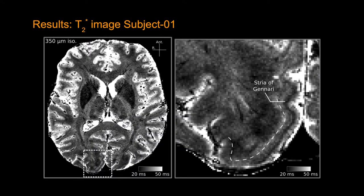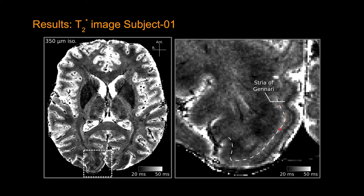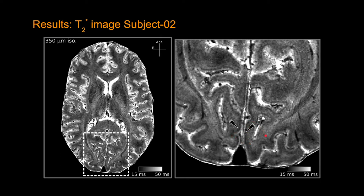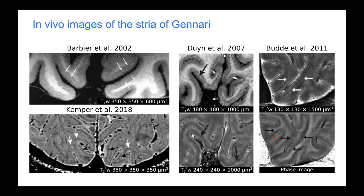Then we do T2* fitting, and here are some results. This is from subject one — you can see a large coverage. When we zoom into the visual cortex, the stria of Gennari is very easily visible. The white matter/gray matter line comes from the T1 image that we acquire. Similarly for subject two, the stria of Gennari is visible, and for subject three as well. Of course, this is not new — the stria of Gennari has been shown in in vivo MRI studies many times. However, we use the visual cortex and stria of Gennari as our control condition, because we actually want to move towards non-visual cortex areas of the brain and do this high resolution, high precision imaging in those areas.